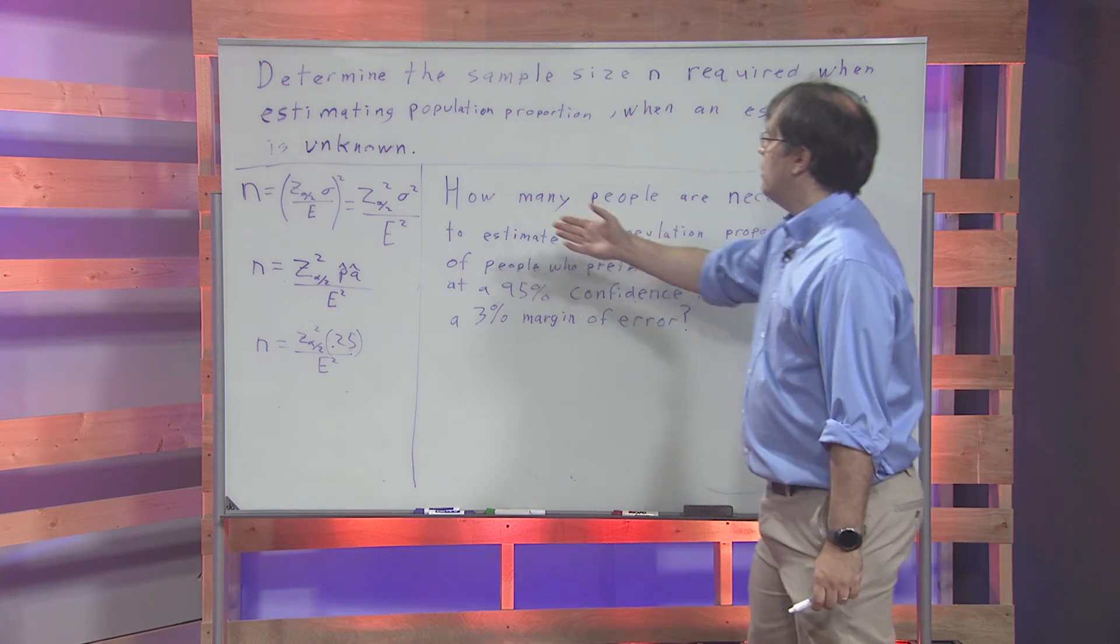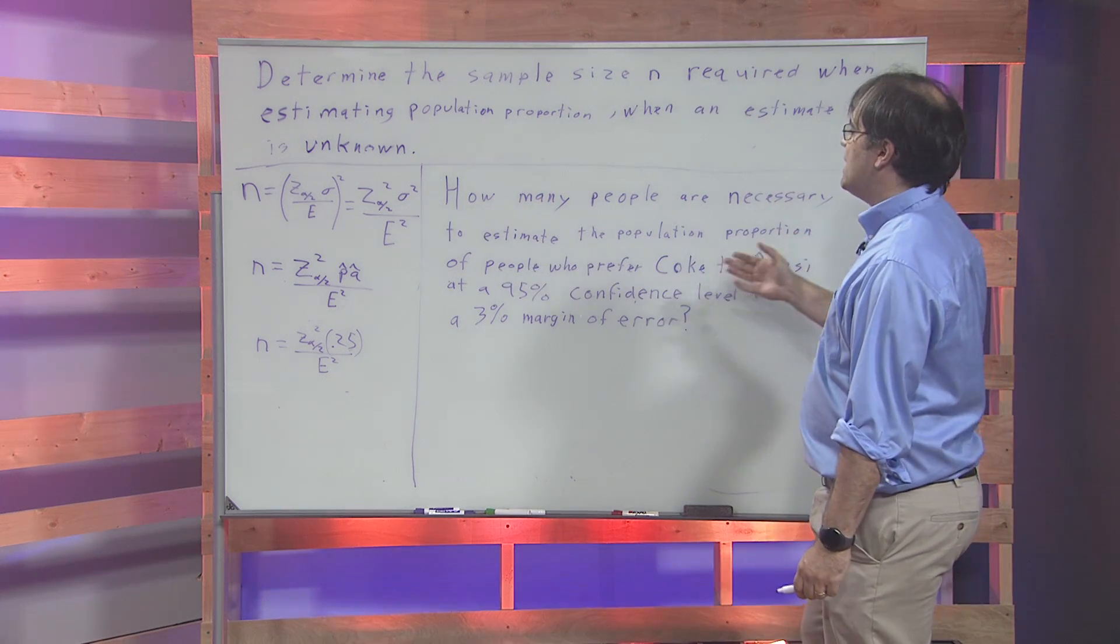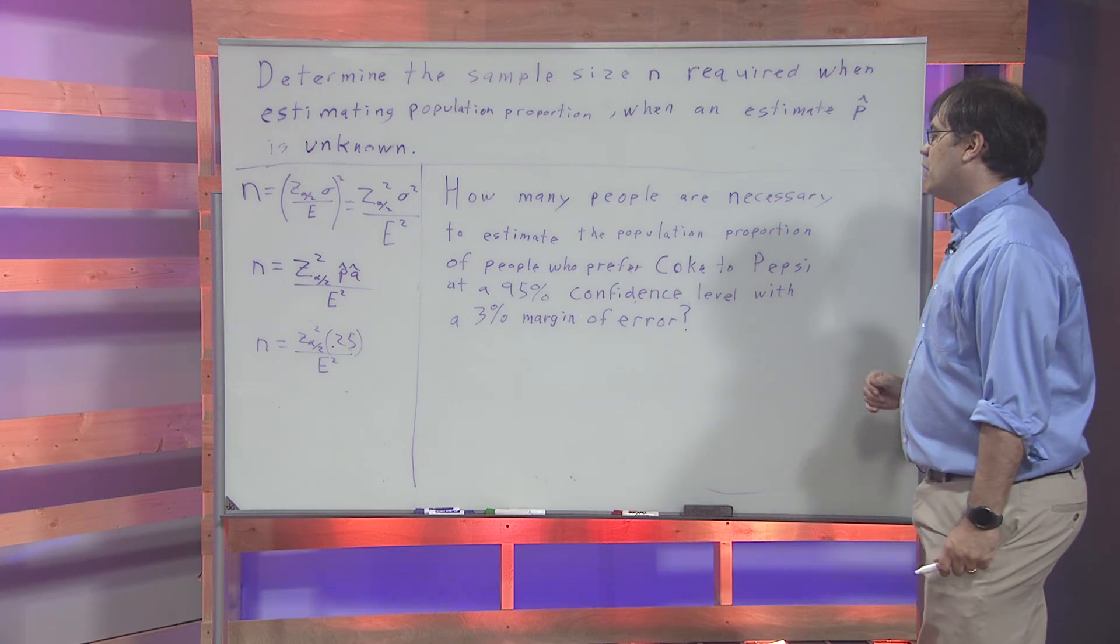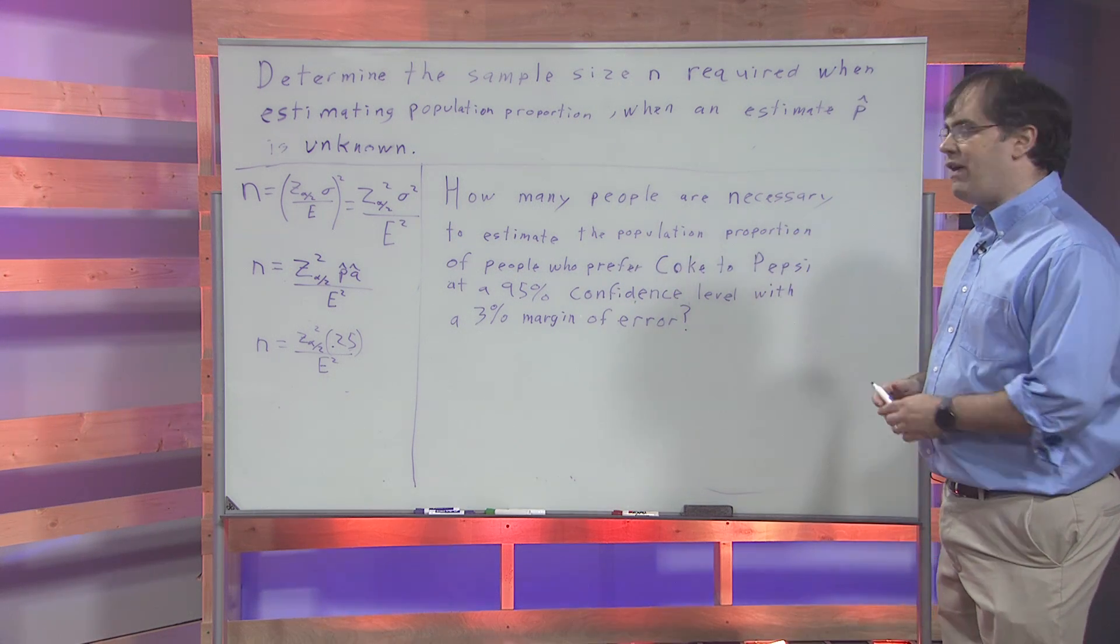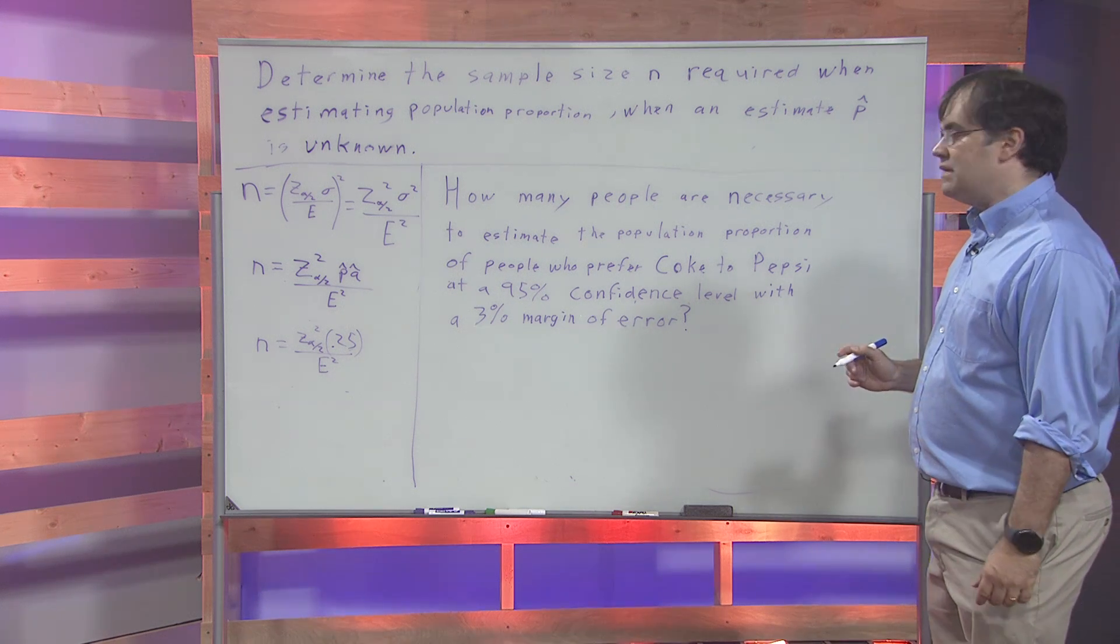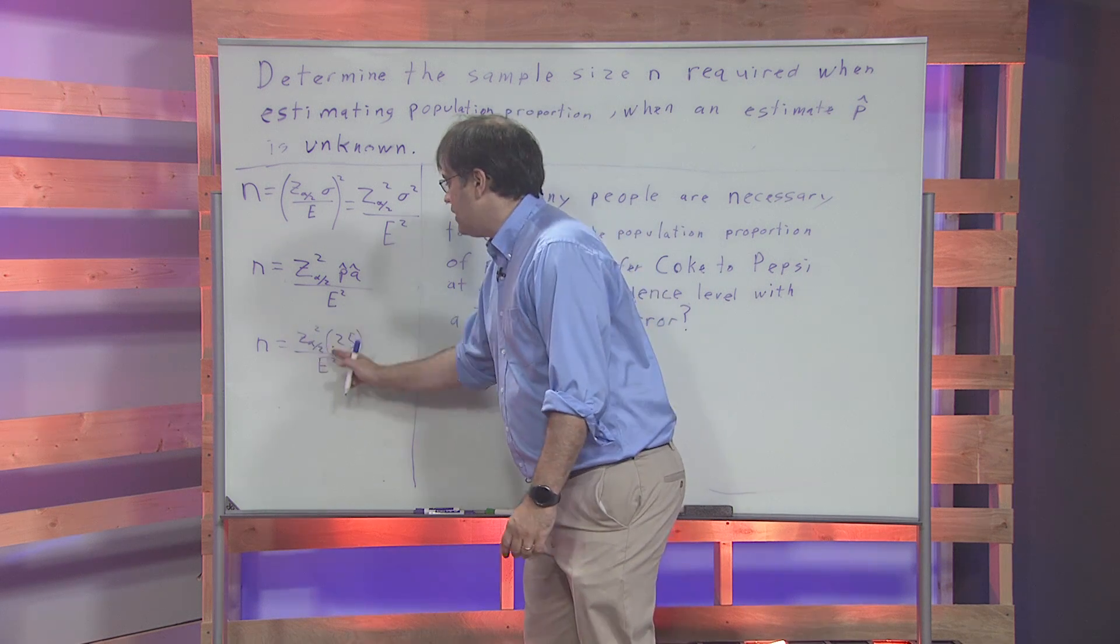So let's work through this example. How many people are necessary to estimate the population proportion of people who prefer Coke to Pepsi at a 95% confidence level with a margin of error of 3%? And again, we're going to use this formula.